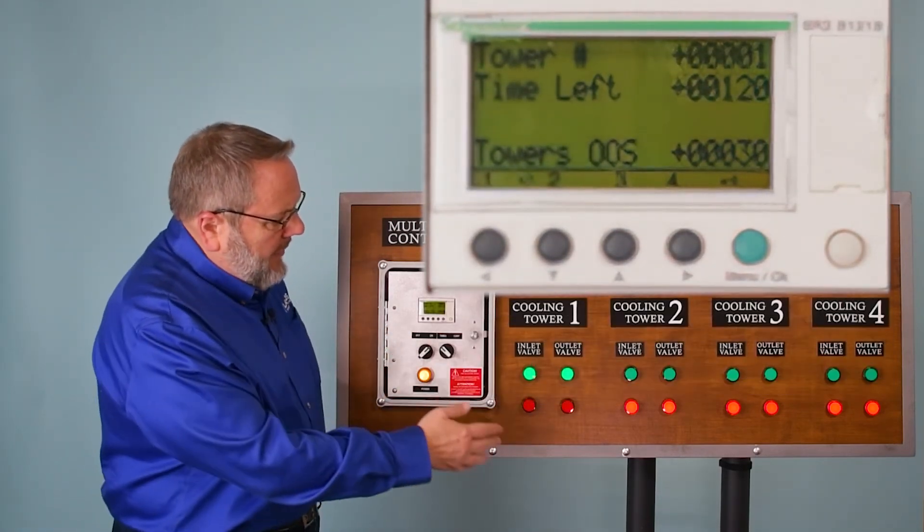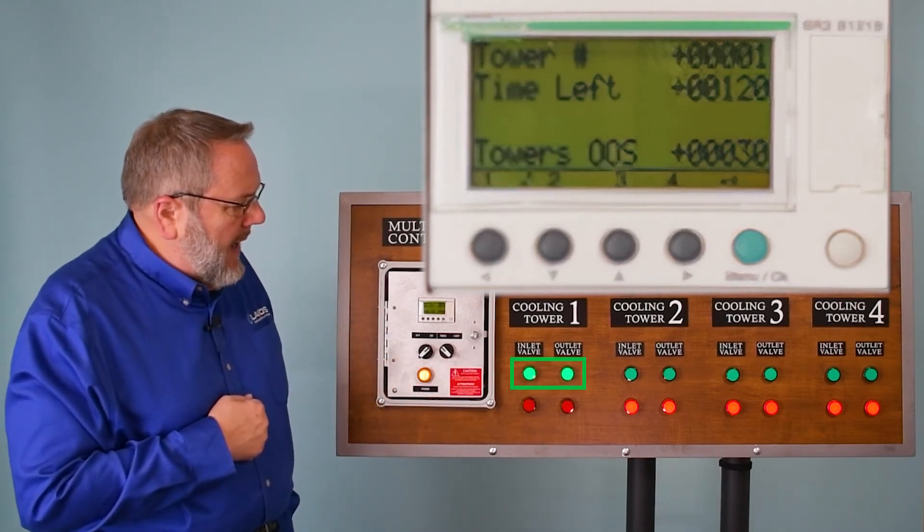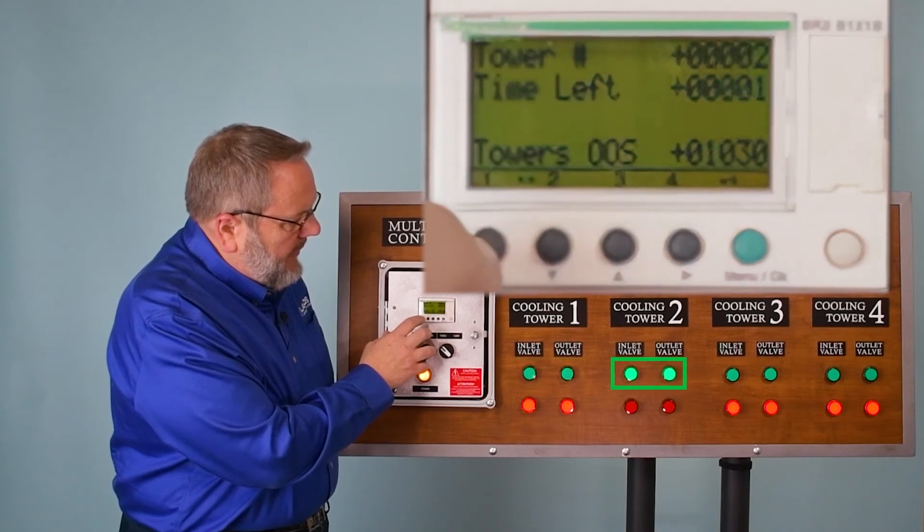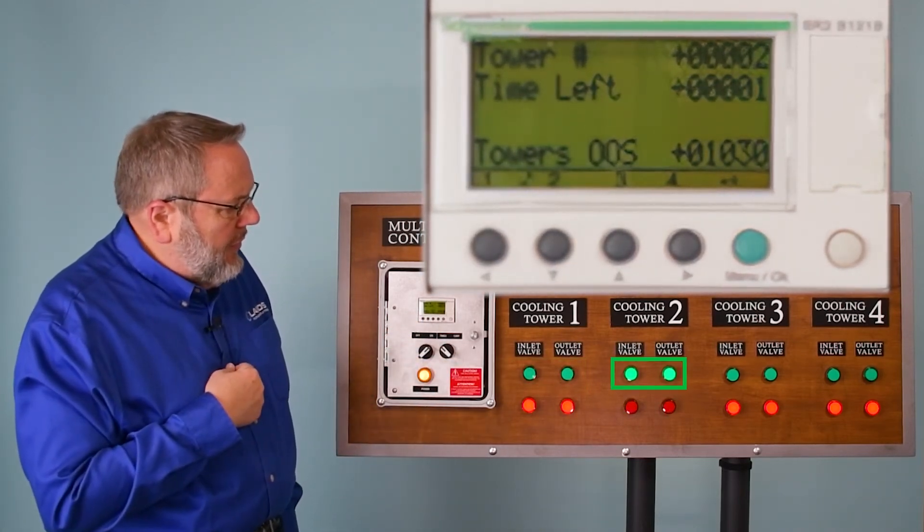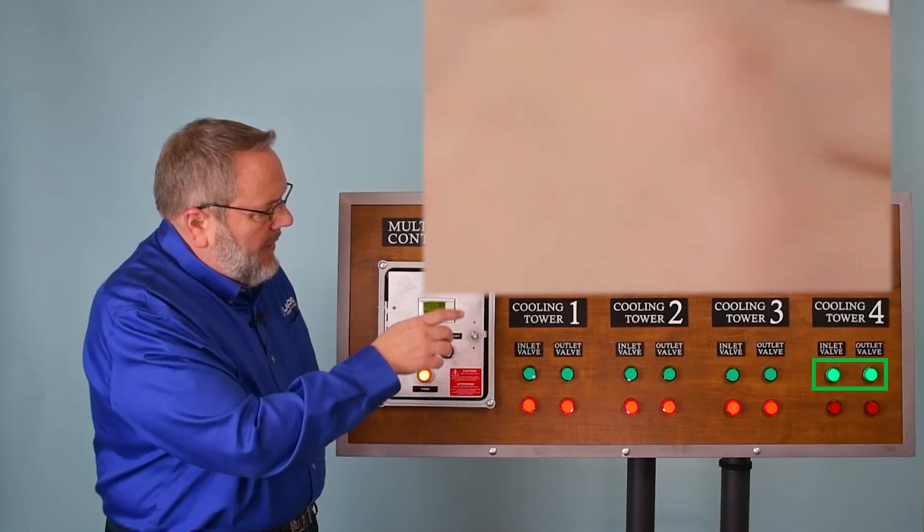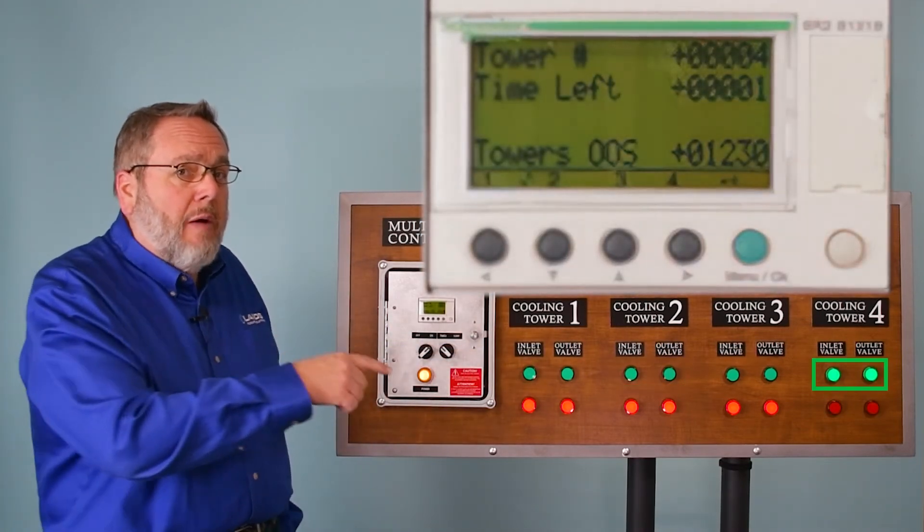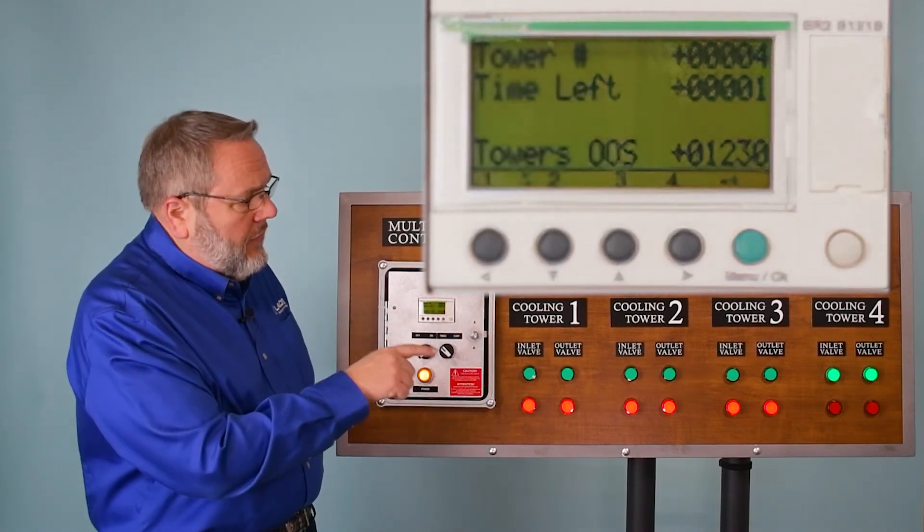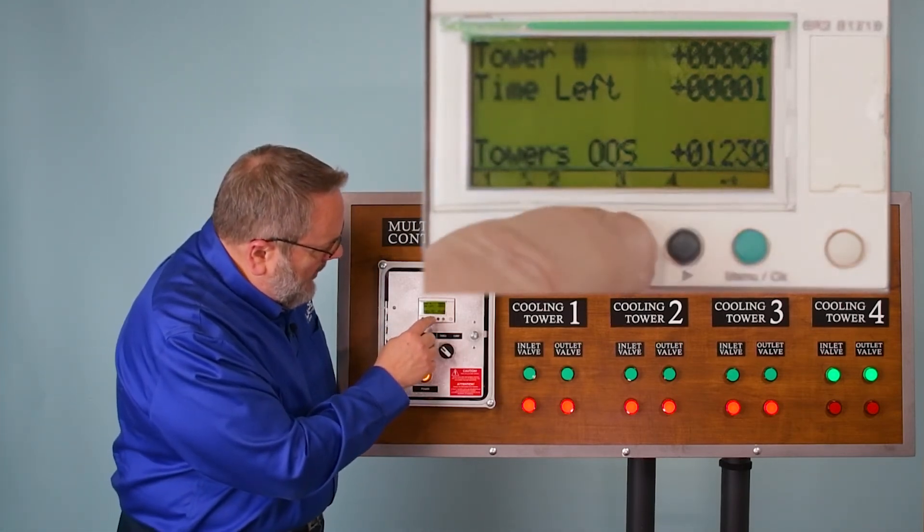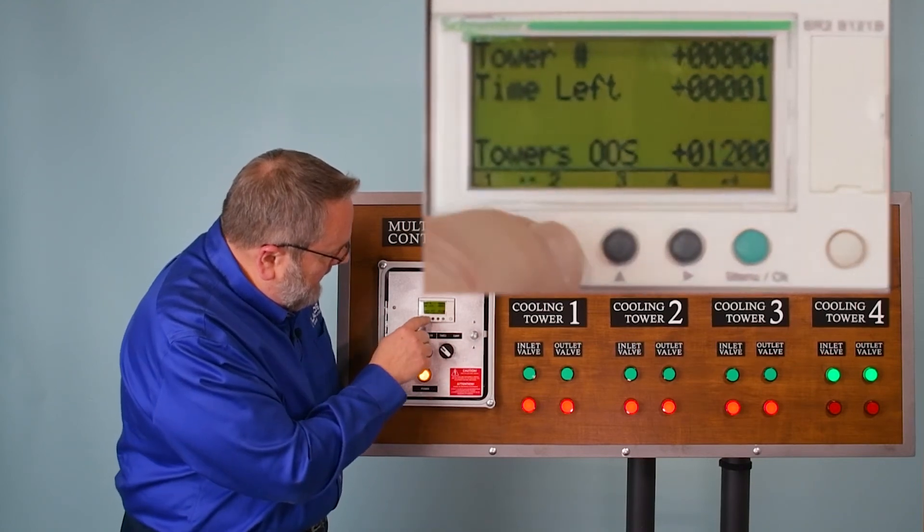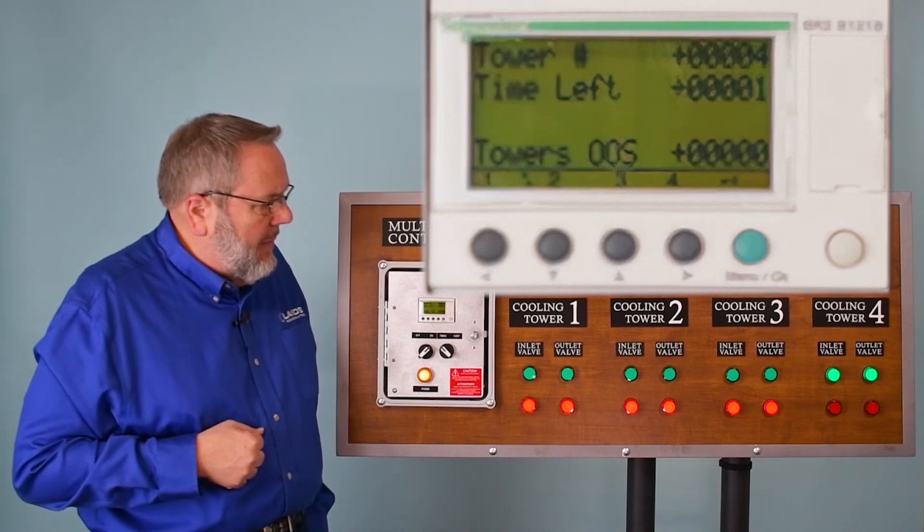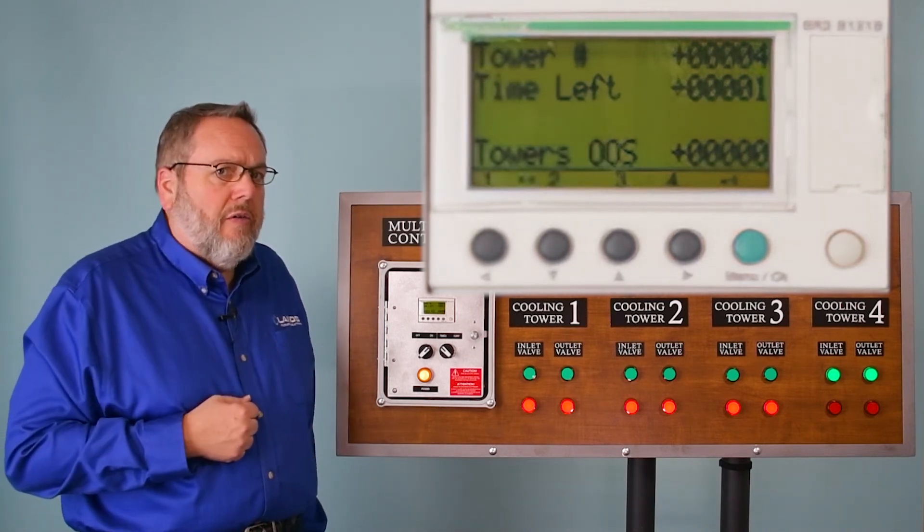So what you'll see here, if you look at the green lights, tower one is running right now. If I close off tower one, now tower two is running. Close off tower two, it bypassed three and went straight to four. So three is closed, it will not operate until you take it back off with the button like this. So again, when you see all zeros there, that means all towers are open, all towers are going to run.